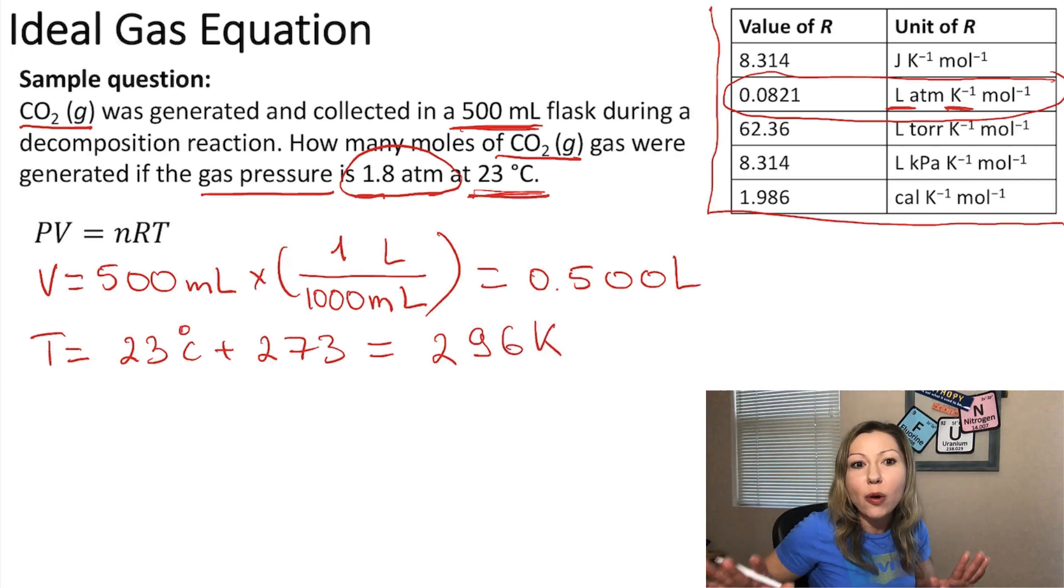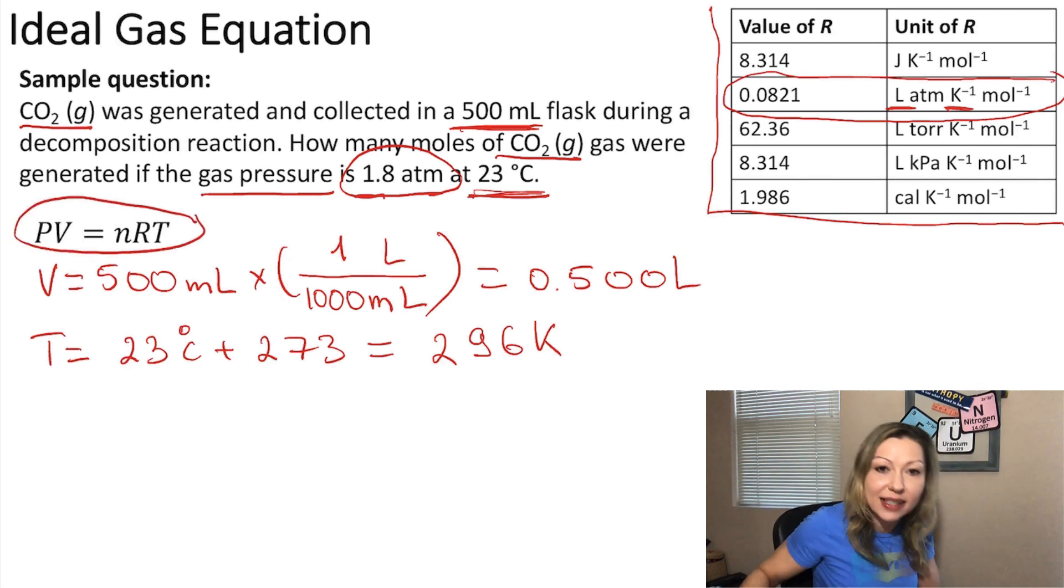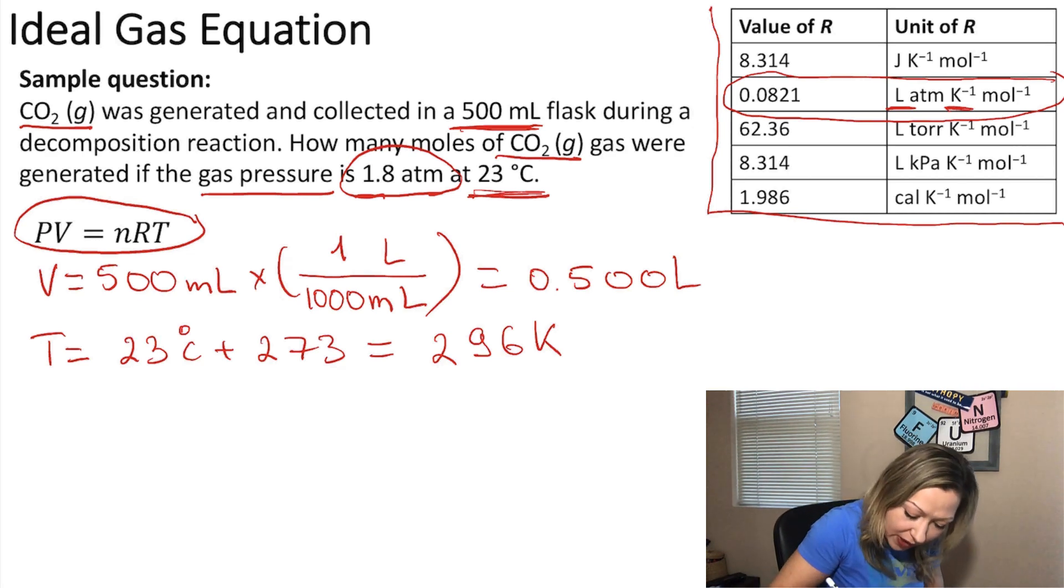Okay, I think our units are right. So we are looking for the number of moles. We have to solve the ideal gas equation for the number of moles. So n from here equals PV over RT.